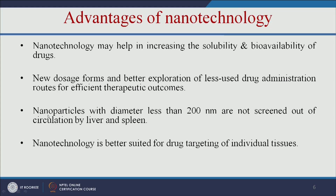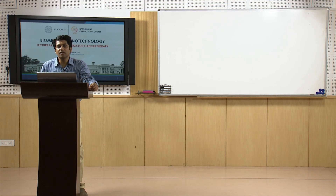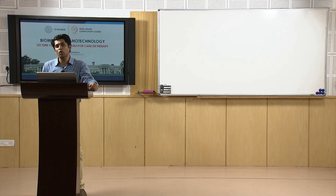Another advantage is that nanoparticles with a diameter less than 200 nanometers are not screened out of circulation by the liver and spleen. If you make a nanoparticle between 70 to 200 nanometers, it can escape from the liver and spleen, stay in the body for more time, and release the drug slowly.